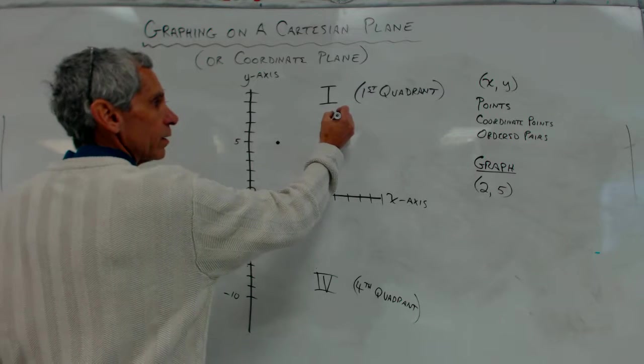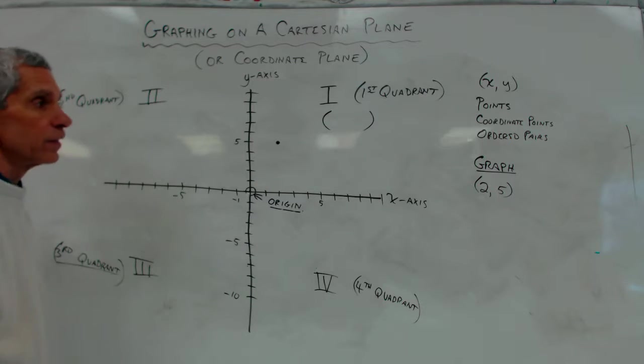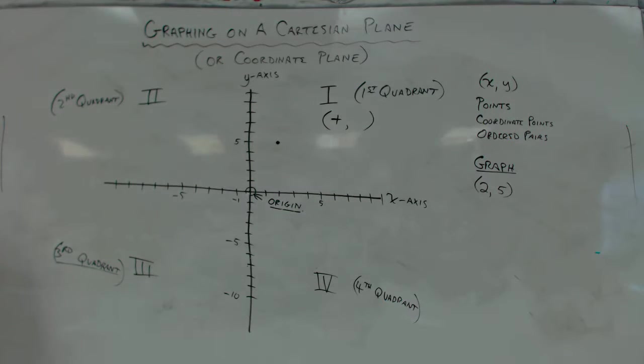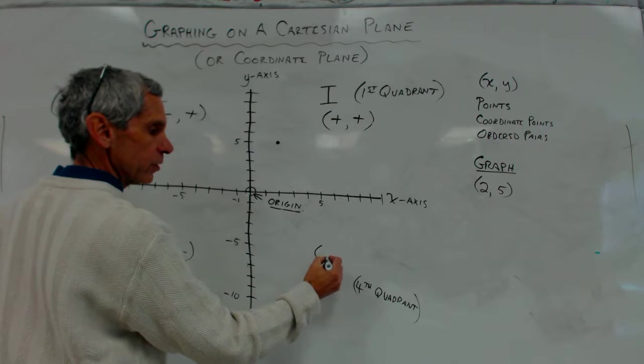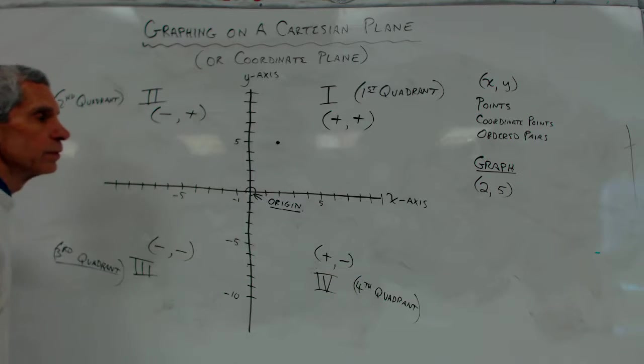So what are the signs? What is x going to be positive or negative in this quadrant 1? Positive. Positive. Is y going to be positive or negative? Positive. Okay. In quadrant 2, is x going to be positive or negative? Negative. And then is y going to be positive? In quadrant 3, x is going to be negative and y is going to be negative. In quadrant 4, x is going to be positive and y, negative. Beautiful.